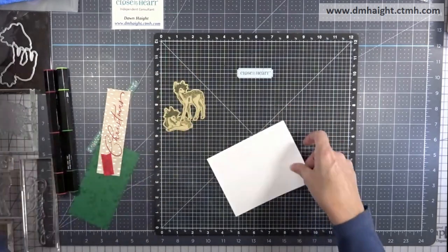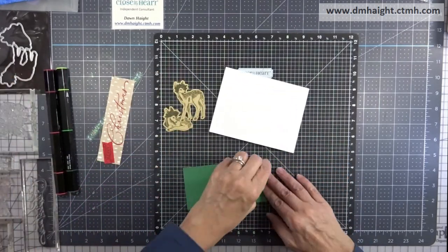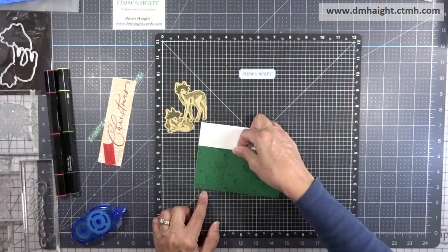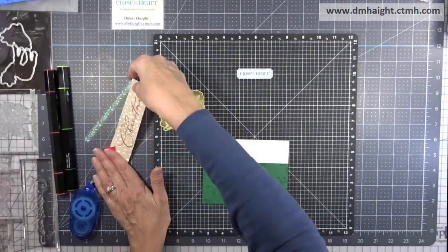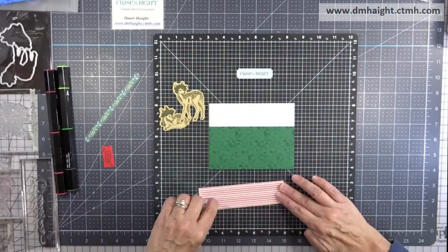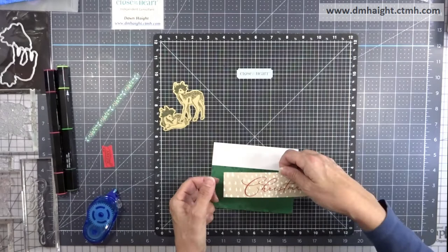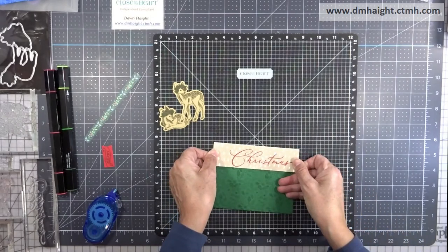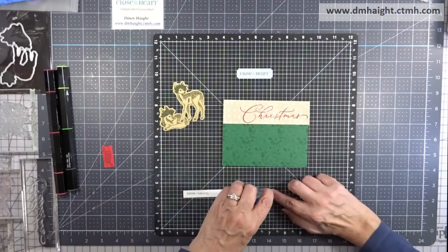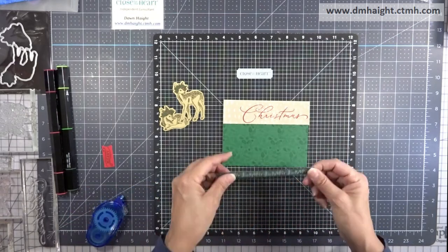So I have an A2 card base. It's four and a quarter by five and a half, and this is going to be landscape. So I'm just going to put everything down using Tombow. The evergreen stamped piece is going to go on the bottom where the opening is, and then the pattern paper is going to go above it. And then I'll layer the zip strip on top over that seam.